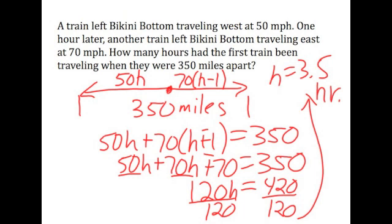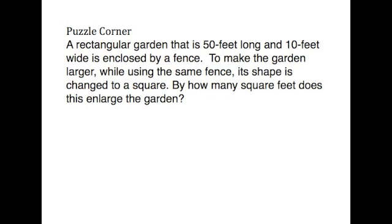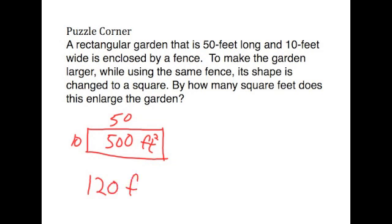Congratulations. Many of you successfully did the puzzle this week. We start with a 10 feet by 50 foot garden, which many of you drew pictures as much as I have just done. 10 times 50 is 500 square feet. You need to know the perimeter to rearrange the fence. So the perimeter of this garden is 120 feet.